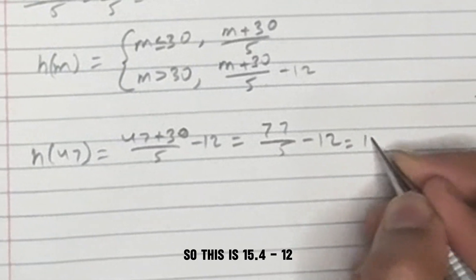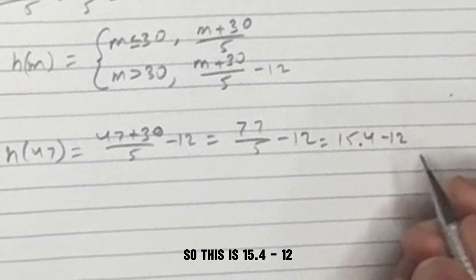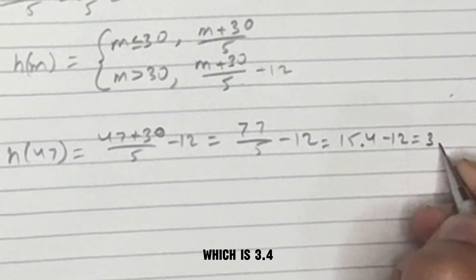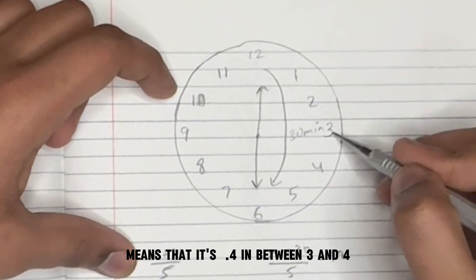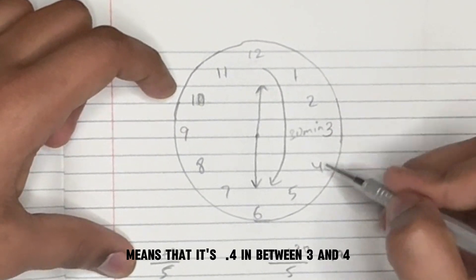So this is 15.4 minus 12, which is 3.4. This 3.4 means that it's 0.4 in between 3 and 4.